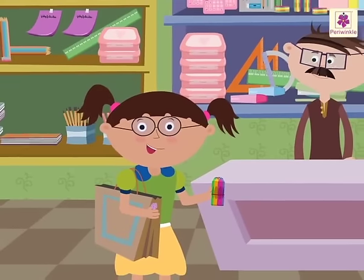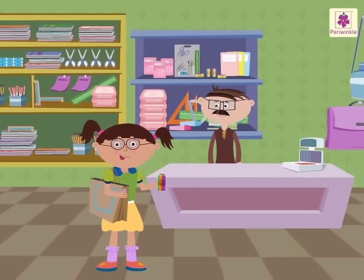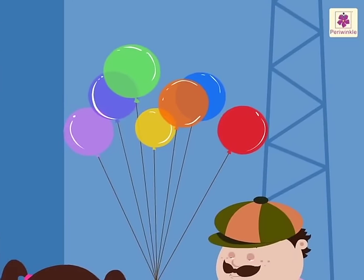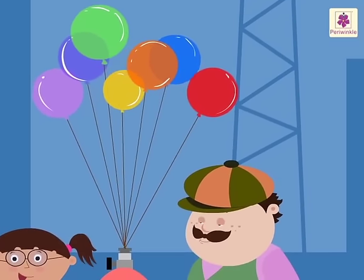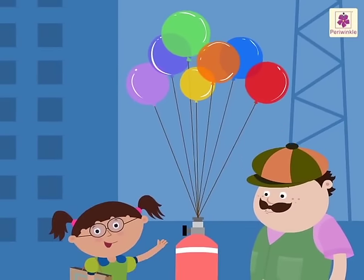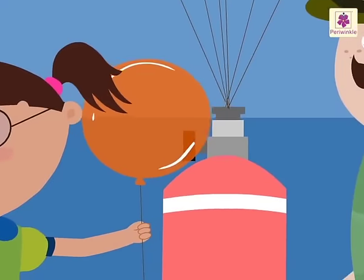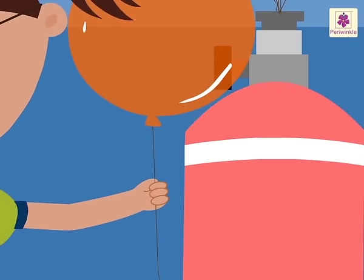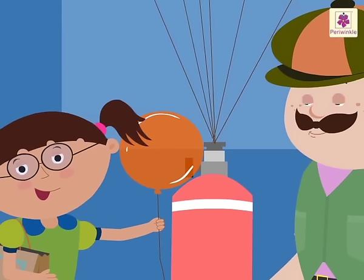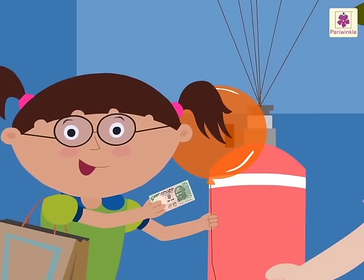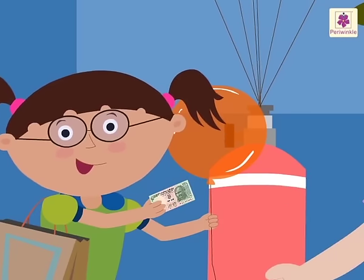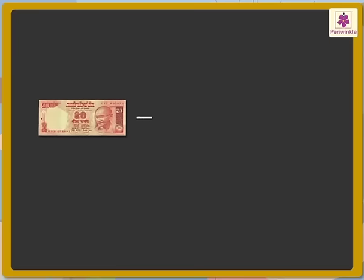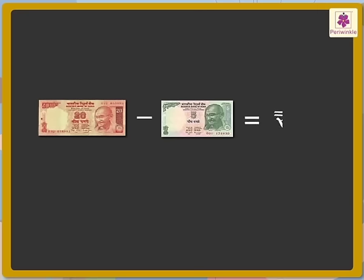She looks so happy with her lollipop and crayons. Now she wants to buy a balloon, so she goes to a balloon seller. She buys a balloon and gives a 20 rupee note to the balloon seller. He gives her 5 rupees back. So what is the cost of the balloon? 20 minus 5 is equal to 15 rupees. The cost of the balloon is 15 rupees.